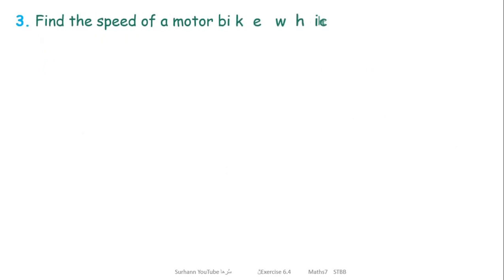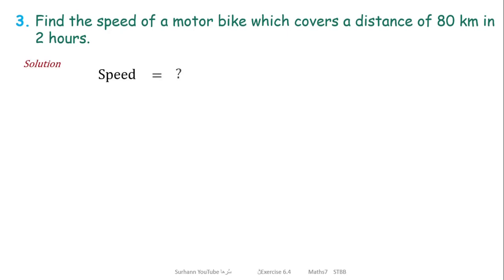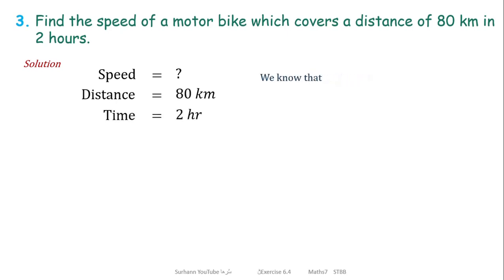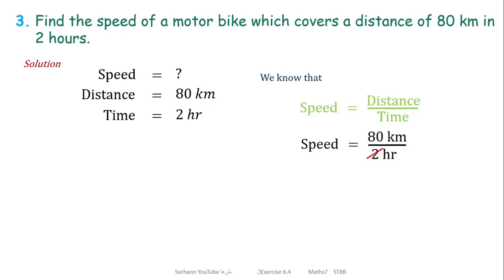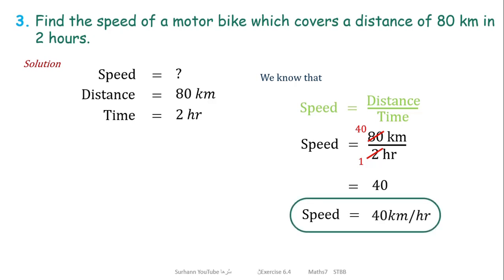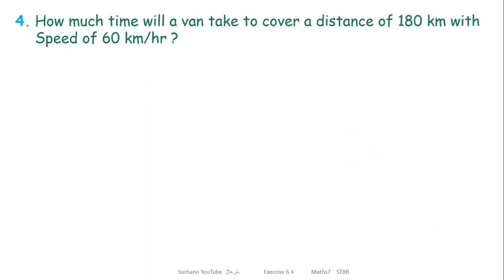For question number 3, first read the question clearly and collect the data. We have to find the speed of the motorbike. Distance is given as 80 kilometers and time is 2 hours. Using the formula speed equals distance over time, we get 40 over 2 equals 40. So the speed of the motorbike is 40 kilometer per hour.